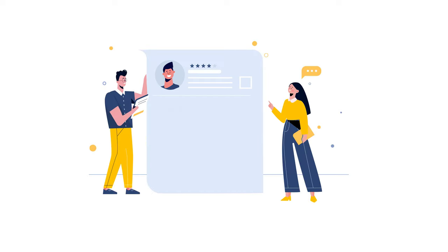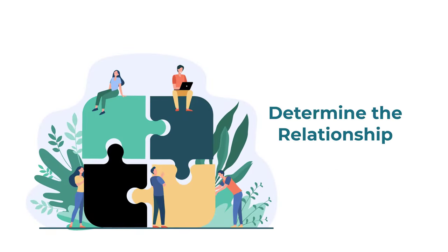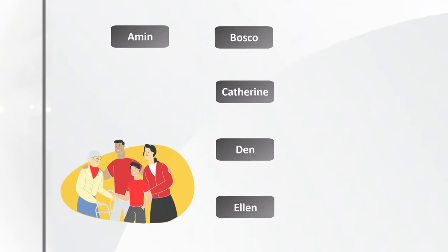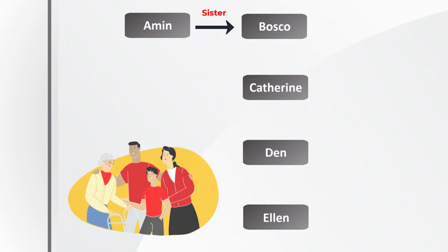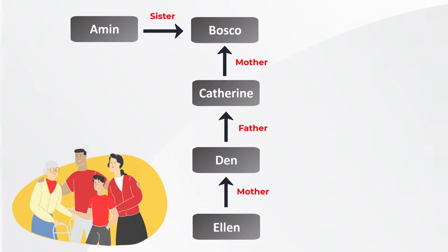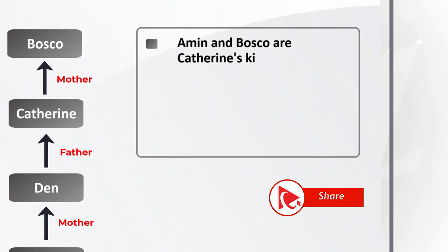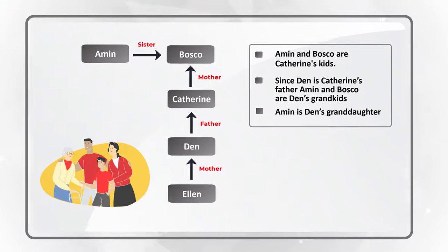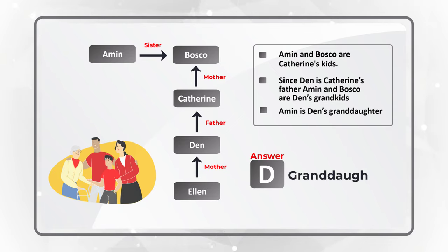The easiest way to determine this multi-generational relationship is to build a diagram. Amin is Baska's sister; Catherine is Baska's mother; Dan is Catherine's father; and Alan is Dan's mother. From the diagram: Amin and Baska are Catherine's children. Since Dan is Catherine's father, Amin and Baska are Dan's grandkids, which means Amin is Dan's granddaughter. The correct choice is D, granddaughter. Hopefully you've nailed this question and now know how to diagram and solve similar problems on the test.